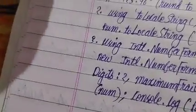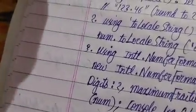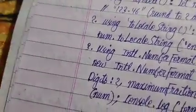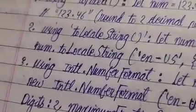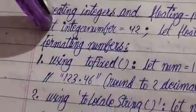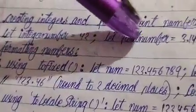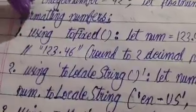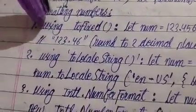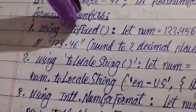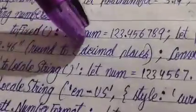By the end of the video, you'll be able to use these methods to convert and format numbers. As you can observe here, I've created a variable using let someIntegerNumber = 42 and floatNumber = 3.14. When it comes to formatting numbers, we can use the toFixed() method.